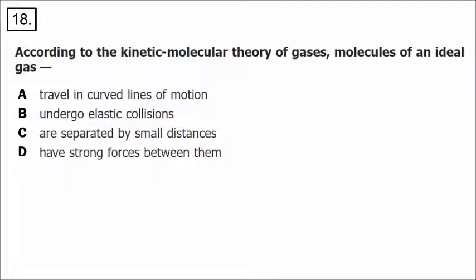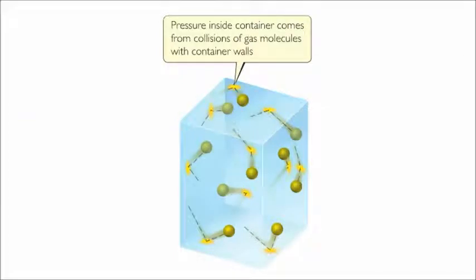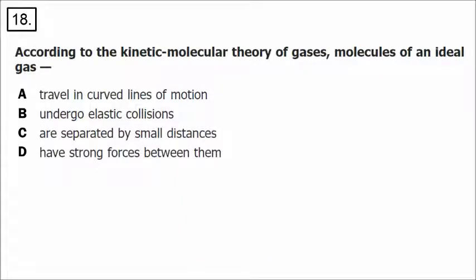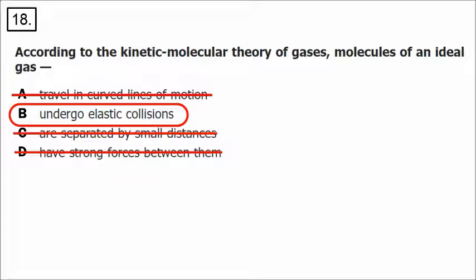Number 18 is about how particles move. In a container of gas, pressure comes from collisions of gas molecules with the container walls. These particles travel in straight lines; when they collide with each other or the walls they bounce off and keep moving — bouncing forever. Unless we change the temperature, they don't speed up or slow down, and they don't travel in curved lines. Gas particles are very far apart and have no attractive forces between them. The correct answer is that they undergo elastic collisions — when they bounce, they keep moving without losing energy.